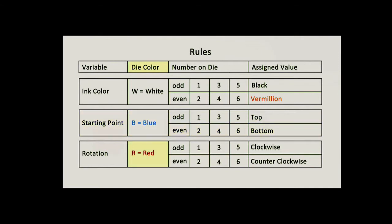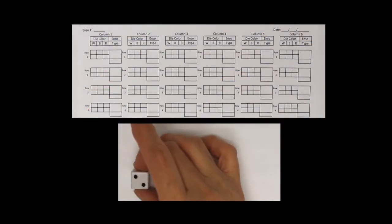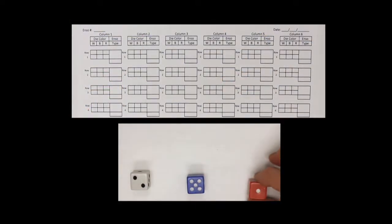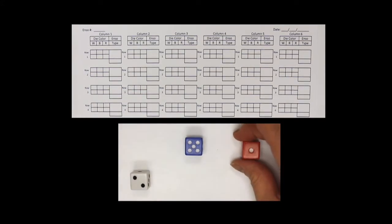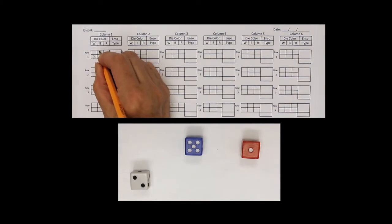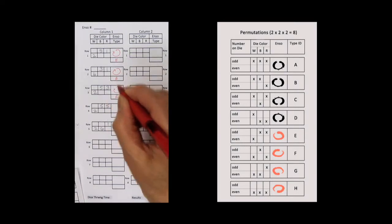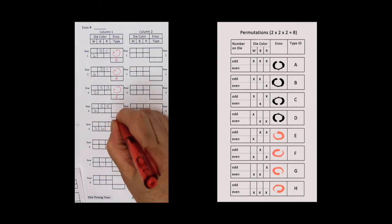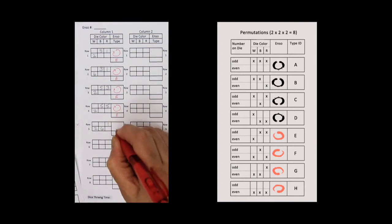The red die will decide the rotation of my enso — for an odd number, I will paint in a clockwise direction; for an even number, I will paint counterclockwise. After I roll the dice, I keep the colors in a consistent order of white, blue, and red. I line up the dice, then move the odd numbers forward and leave the even numbers back. I record the numbers as well as the pattern. The last stage is taking my numeric visual patterns and matching them to the corresponding enso shape — recording each enso's shape, color, and whether it's clockwise or counterclockwise. After recording all results, I'm ready to do my calligraphy.